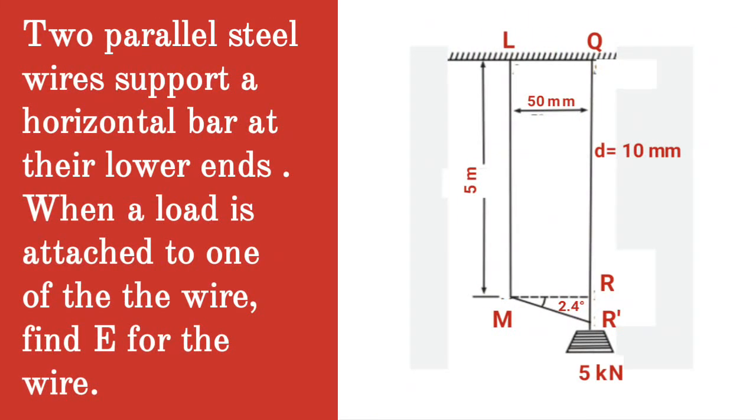Question. Two parallel steel wires support a horizontal bar at their lower ends. When a load is attached to one of the wires, find E for the wire.